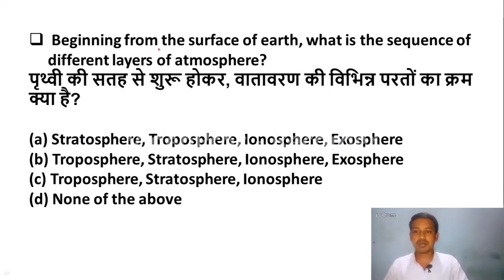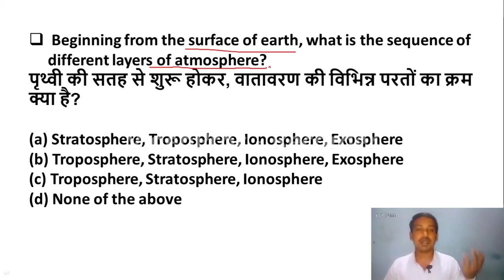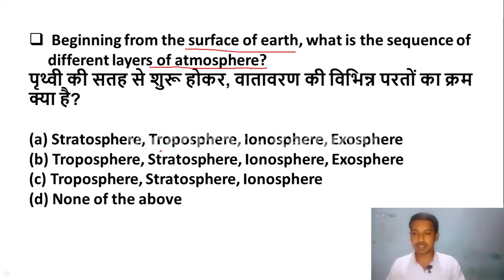Beginning from the surface of Earth, what is the sequence of different layers of atmosphere? The layers are: troposphere, stratosphere, ionosphere, mesosphere, exosphere. Option A: stratosphere, troposphere, ionosphere, exosphere. Option B: troposphere, stratosphere, ionosphere, exosphere. Option C: troposphere, stratosphere, ionosphere. Option D: none of the above. The correct sequence is Option B — troposphere, then stratosphere, then ionosphere, and last exosphere.